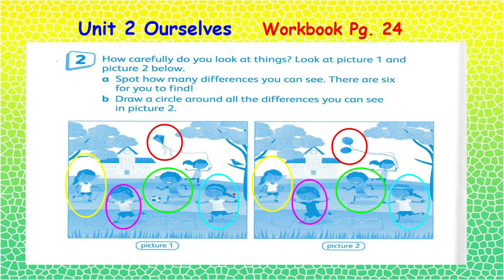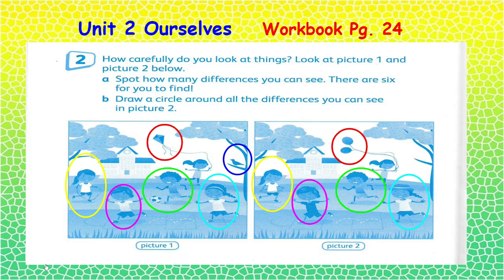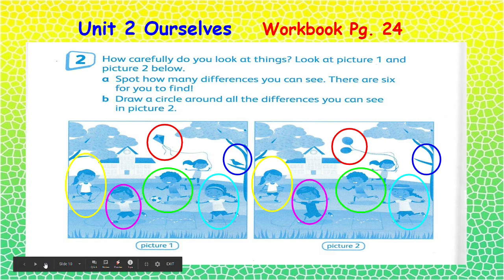Now there is one more difference that we need to find. Can you find it? There is a bird on the branch in picture one. In picture number two, there is no bird on the branch.